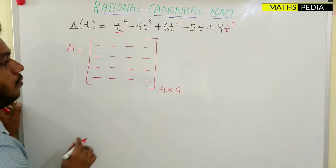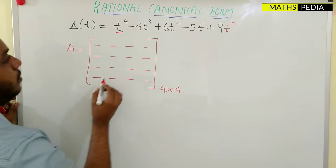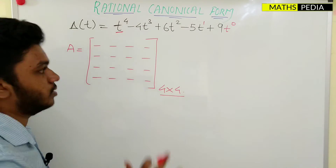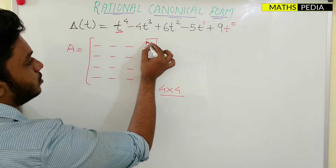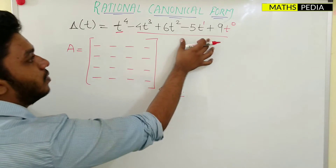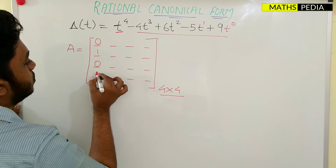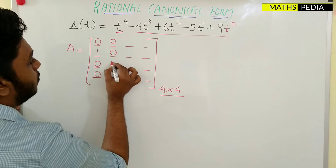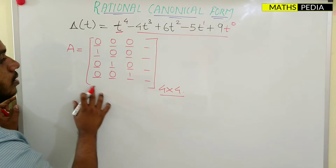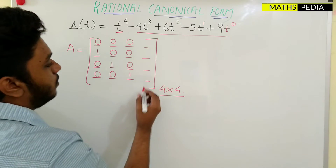The 4×4 matrix has 16 elements. For the 4×4 rational canonical form matrix, three columns are already fixed. The fixed elements are: first column 0,0,0,0; second column 1,0,0,0; third column 0,1,0,0 — so those three columns are fixed. We only need to write the fourth column by looking at the expanded characteristic equation.